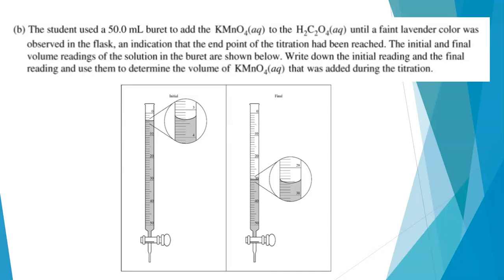The student used a 50.0 milliliter buret to add the potassium permanganate to the oxalic acid solution, until a faint lavender color was observed in the flask. That's because permanganate acts as its own indicator. When you have excess permanganate, you end up with a pale pink color because of the Mn2+ ions that form. That's how you know you reach the endpoint of the titration. And then we've got pictures of the burets before and after. So the question says, write down the initial reading, write down the final reading, calculate the volume of potassium permanganate solution that was dispensed from the buret during the titration.